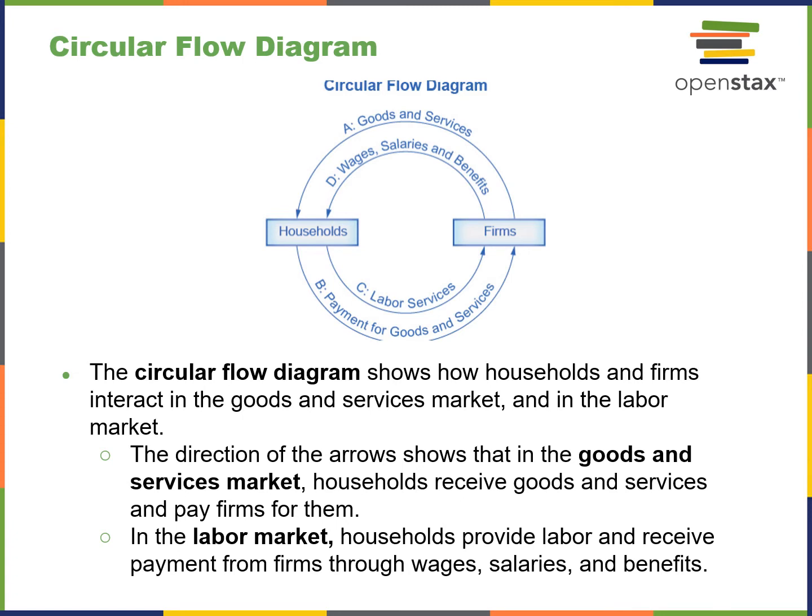The circular flow diagram on this page shows how households and firms interact with each other in terms of goods and services. Wages and salaries flow from firms — basically service providers or producers — to households that are consumers. In turn, households provide labor services and consume the products created by the firms.